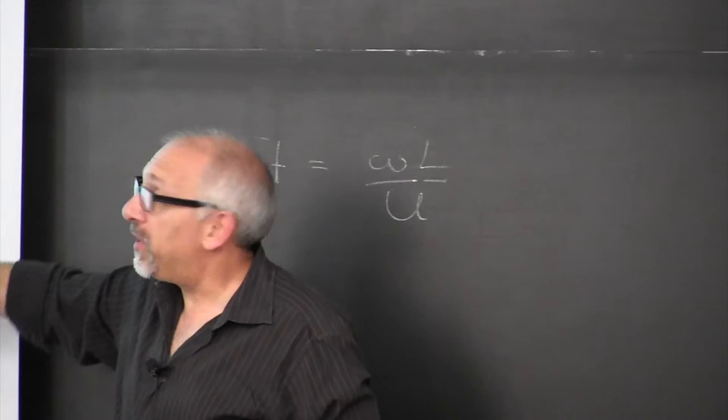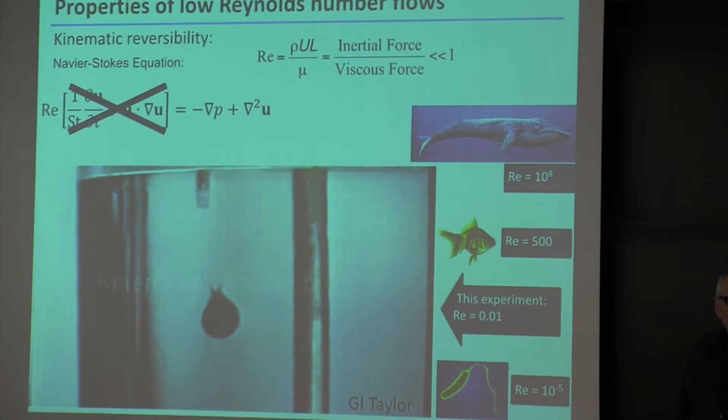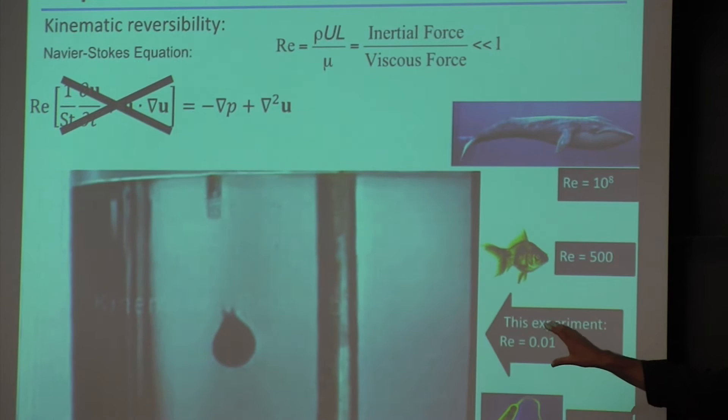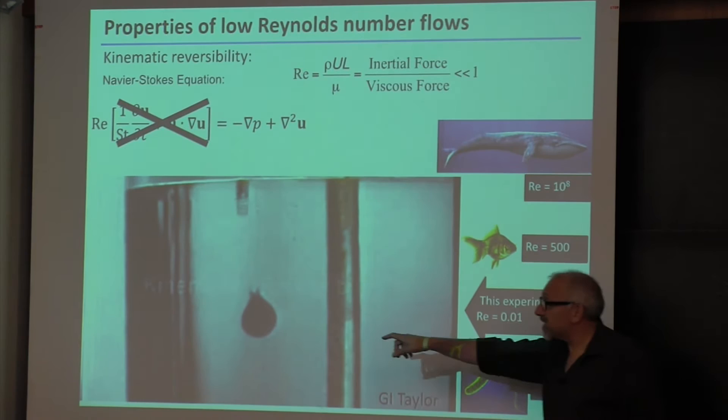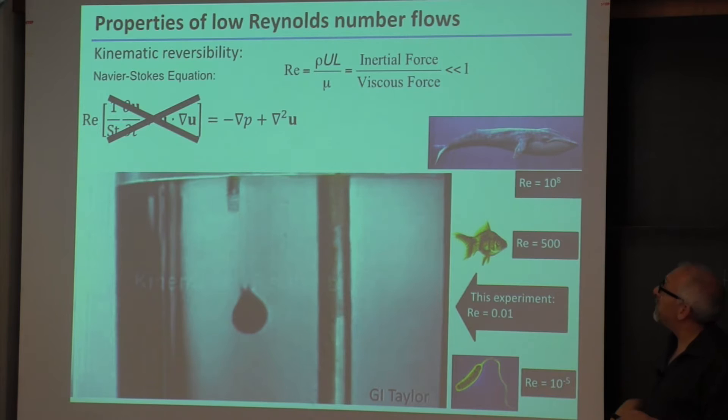We're way down in the low Reynolds number regime with bacteria. This is a different video from the same film by G.I. Taylor, showing kinematic reversibility at low Reynolds number — a blob of fluid rotates around and then rotates back and remains a blob. So we have kinematic reversibility.